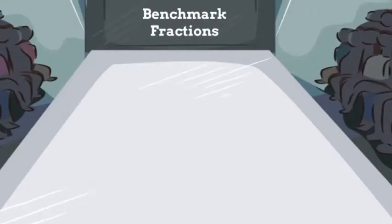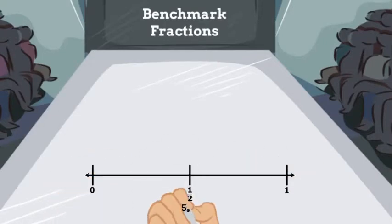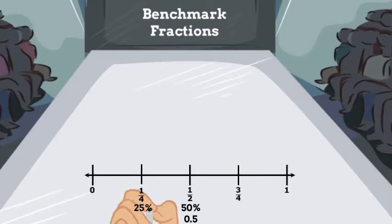Now let's look at some benchmark fractions. We'll start with one half. Since half a dollar is 50 cents, one half is 50 percent or 0.5. If you cut a half in half, you get one fourth. Four quarters make a dollar, so one fourth is 25 percent or 0.25 and three fourths is 75 percent or 0.75.